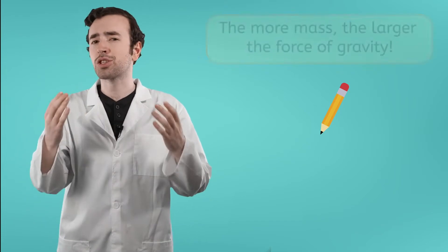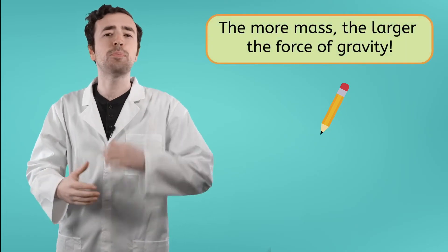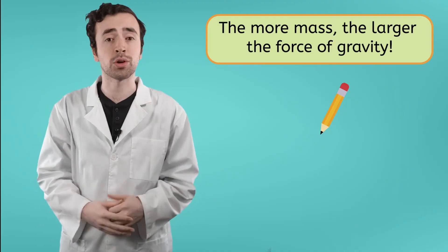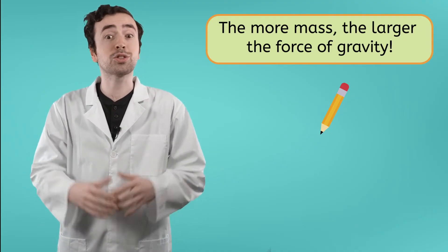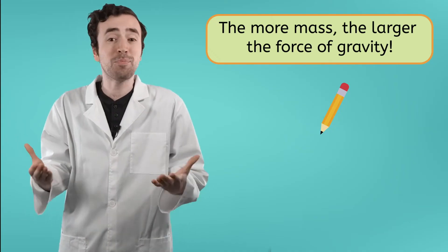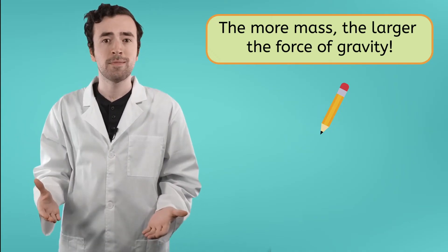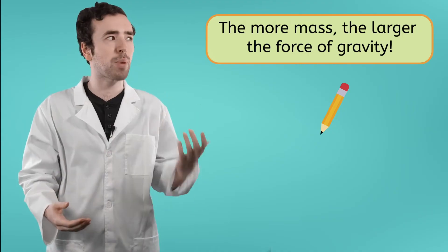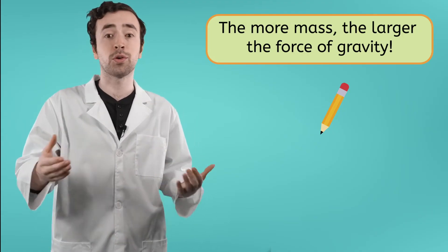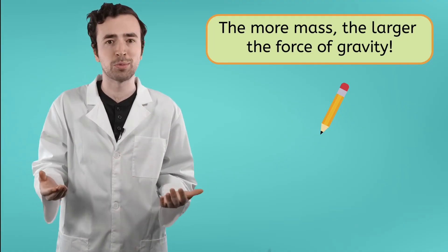Because the strength of gravity is dependent on mass. The more mass, the stronger the gravity. Earth is really massive. So, of course, its pull from gravity is going to be super strong. Neither you or this pencil have enough mass to make the pull of gravity between you two noticeable at all.